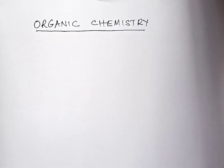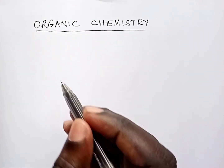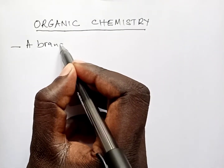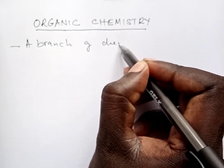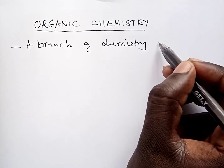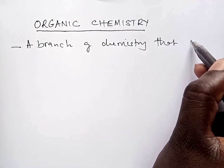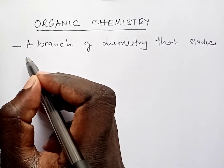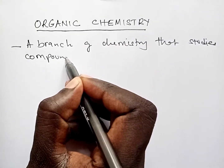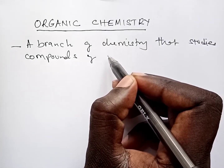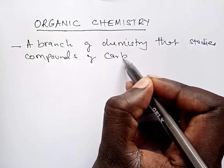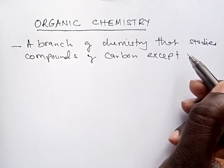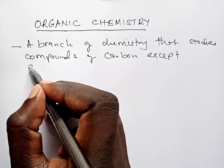Organic chemistry. Organic chemistry is a branch of chemistry that studies compounds of carbon. We study compounds of the element carbon, but in this study we exclude the oxides of carbon.